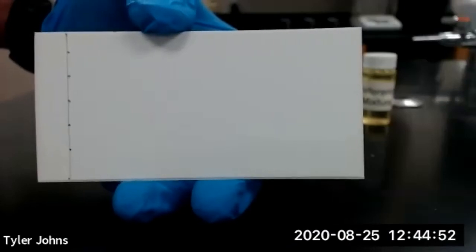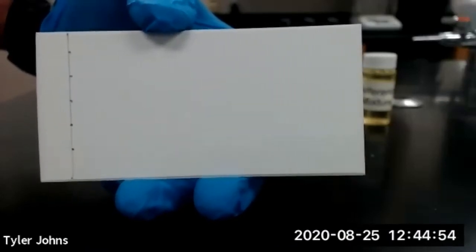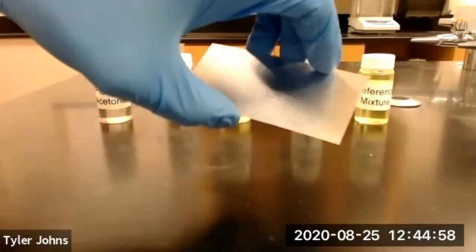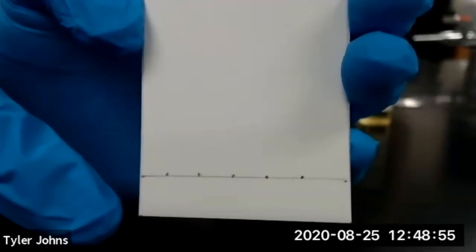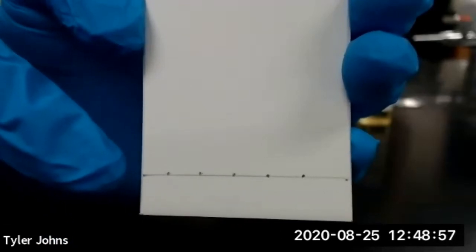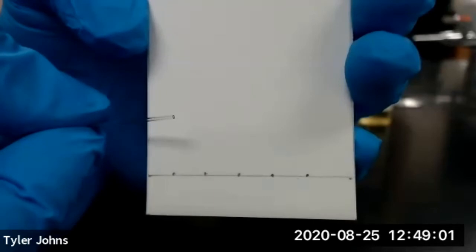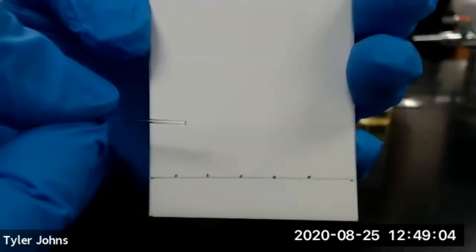This is our TLC plate, and it consists of silica gel on an aluminum backing. And we're going to spot each of our compound solutions one centimeter up from the bottom of the TLC plate using a micro cap or a very thin capillary tube.